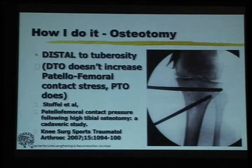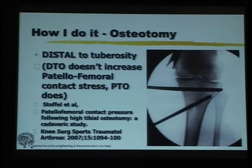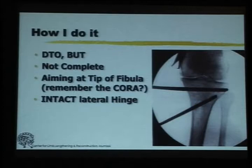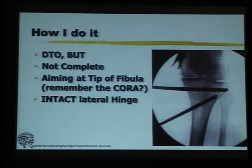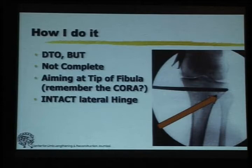A distal osteotomy does not increase patellofemoral pressure, which may not matter in small corrections but becomes important in patients with significant metaphyseal varus. The osteotomy runs from medial to lateral, aiming for the tip of the head of the fibula, but not cutting the lateral cortex — so the lateral cortex remains as a hinge. Though the osteotomy is lower than the hinge, the CORA is at the tip of the fibula, and biomechanically this leads to a good correction.